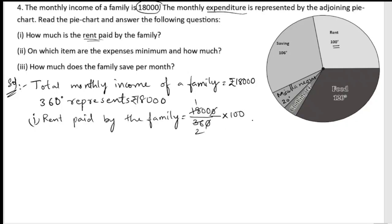After cancelling, we get 100 × 50, which gives us 5,000. So the rent paid by the family is ₹5,000.